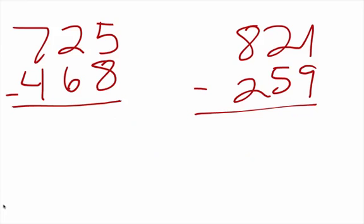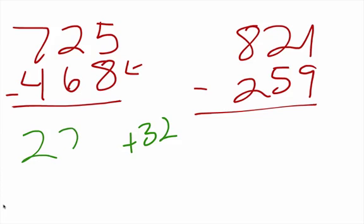Getting back to 468 — we know that 468, you have to go up 32 to get to 500. So we have 725 minus 500, which gives us 225, and then 225 plus 32 is going to give us 257. If you do it the old-fashioned way, you'll get the same answer.